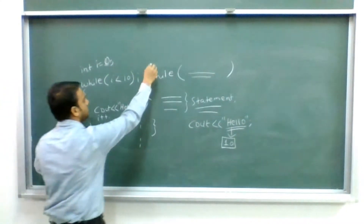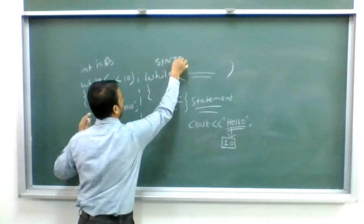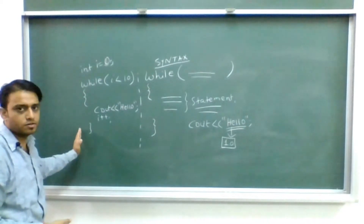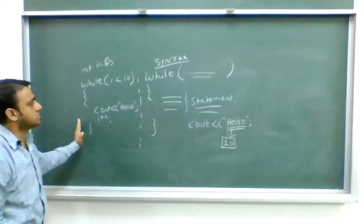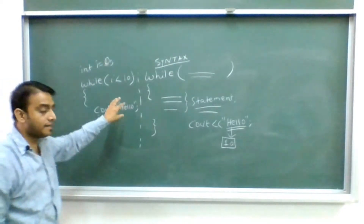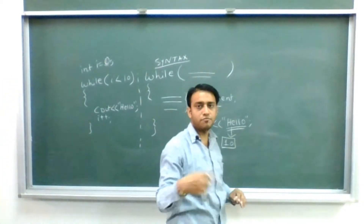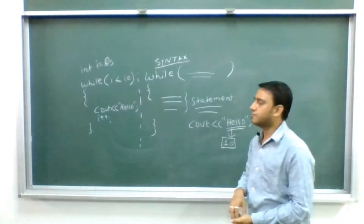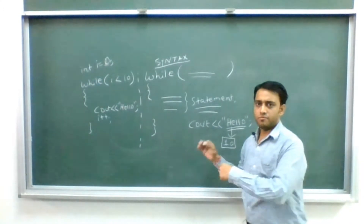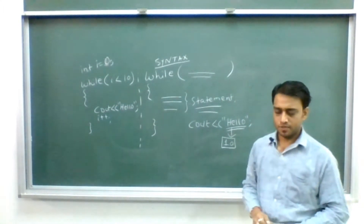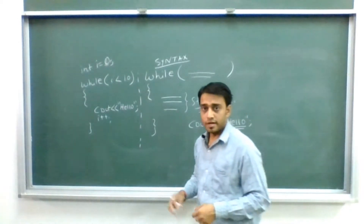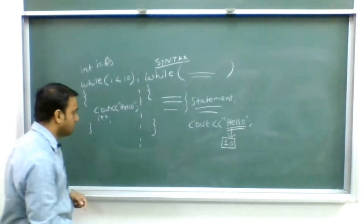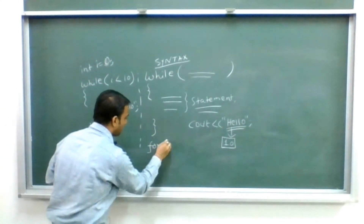This is the implementation of the while loop — I'm writing the same 'hello' statement. Now we'll understand the basic difference of why we use while loop in certain cases and why we use for loop in certain cases. Before going into that, let me give you a brief idea about the other loop.